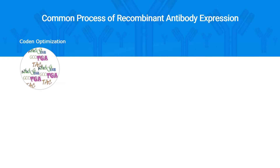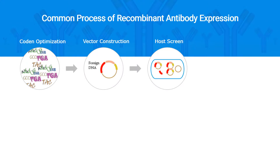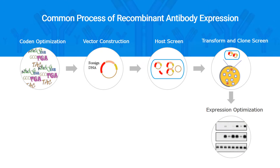Step 1: Optimize codon usage based on antibody sequence and vector sequence. Step 2: Construct the target sequence — inserting a foreign sequence into the chosen vector. Step 3: Select suitable expression hosts based on sequence and protein character. Step 4: Transform the recombinant plasmid into the host and screen positive clones with screening markers.